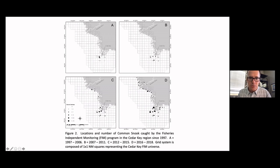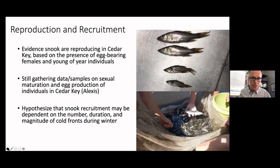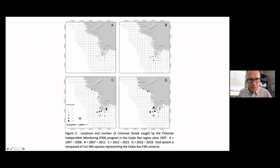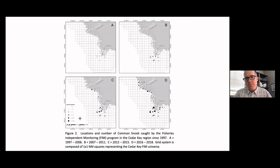A single snook was captured in the FWC sampling area from 1997 to 2006. From 2007 to 2011 snook became fairly common around the keys, with one record toward the Suwannee River. From 2012 to 2015 we started seeing snook throughout the region. In the most recent period, 2016 to 2018 and continuing today, we see snook throughout the Cedar Key area and up through the Suwannee and even north of the Suwannee River. This documents a really dynamic expansion of snook into our area, published last year.